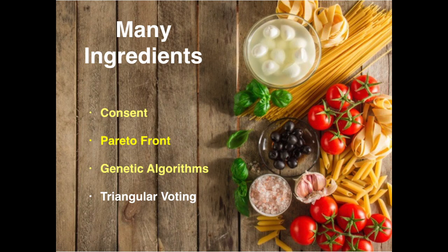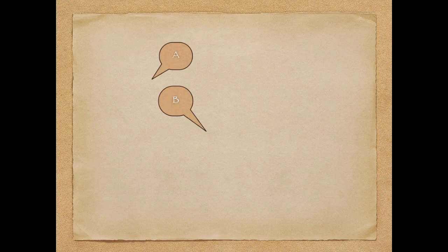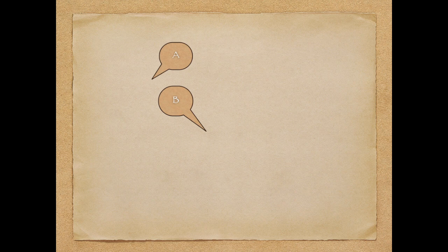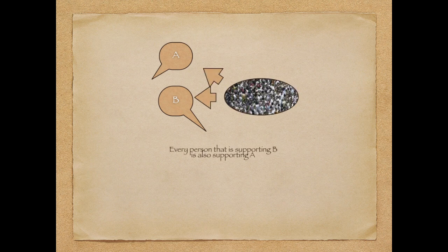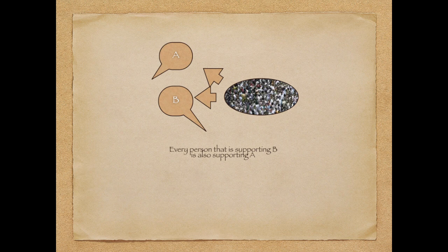The next one is Pareto Front. What is the minimum case when I can surely eliminate a proposal? The minimum case, the extreme case, is if every person that supports this proposal also supports another proposal.